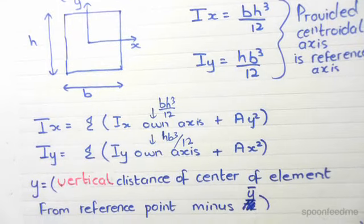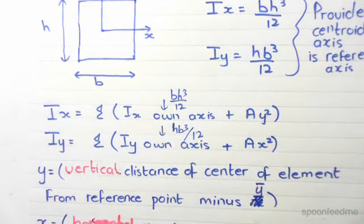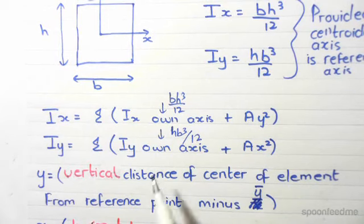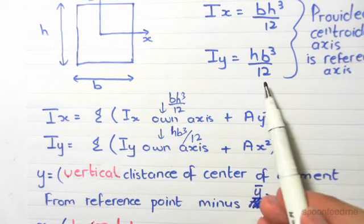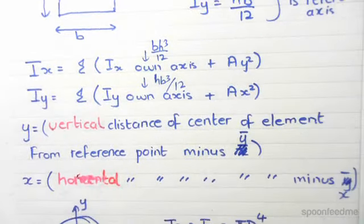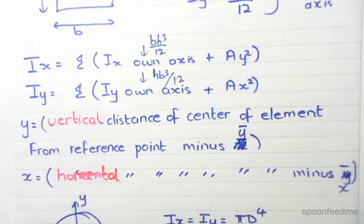And this should be x bar. So what is y? y is the vertical distance of the center of an element from the reference point minus y bar. And Iy equals to Iy on axis, so it's on centroidal axis, which is hb³ divided by 12 as you can see up here, plus area times x². And x is the horizontal distance from the center of an element.